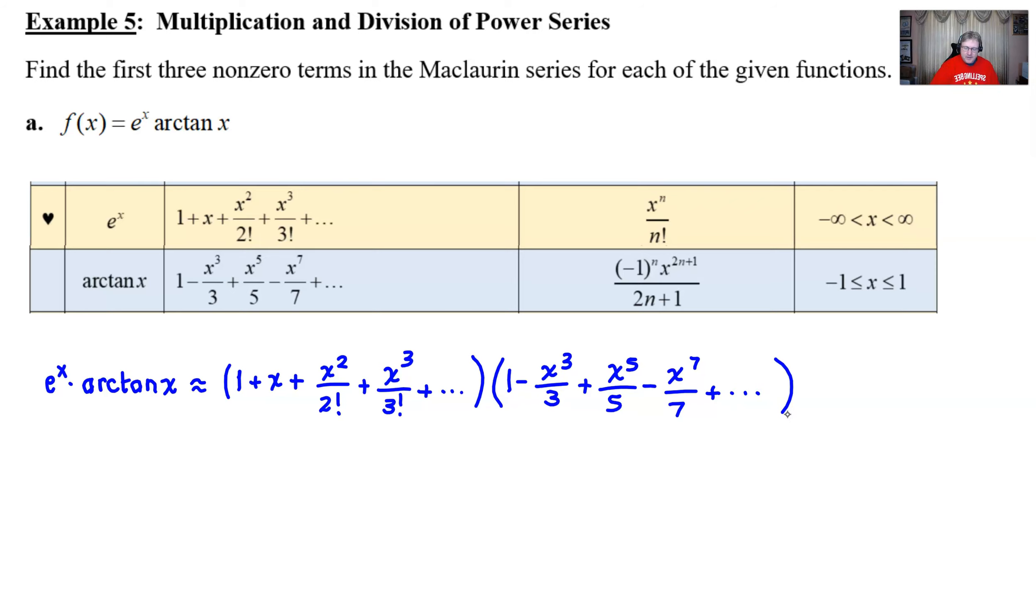Now, I know that this might be one's worst nightmare algebraically. It's like, whoa, I have to take a four term expression and multiply it by another four term expression. I mean, that's worse than FOIL. I don't know how many other letters you'd have to use. F-O-I-L-M for the middle, inside middle, outside middle. What would it look like?